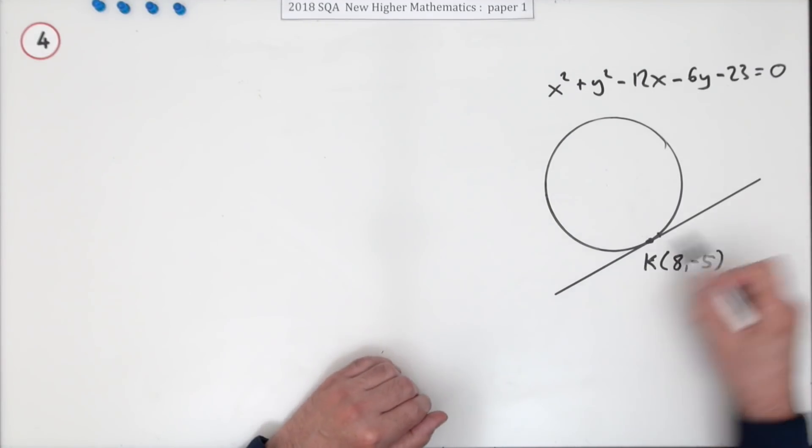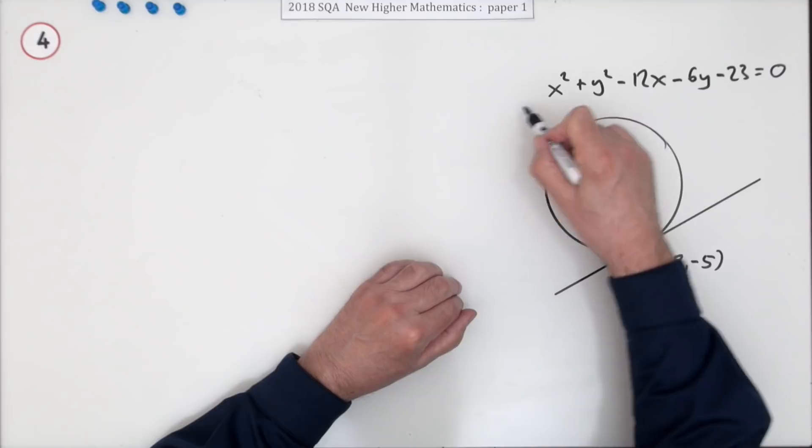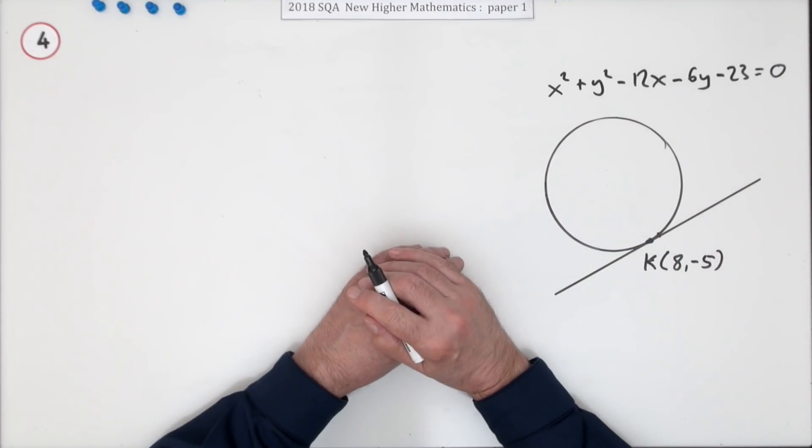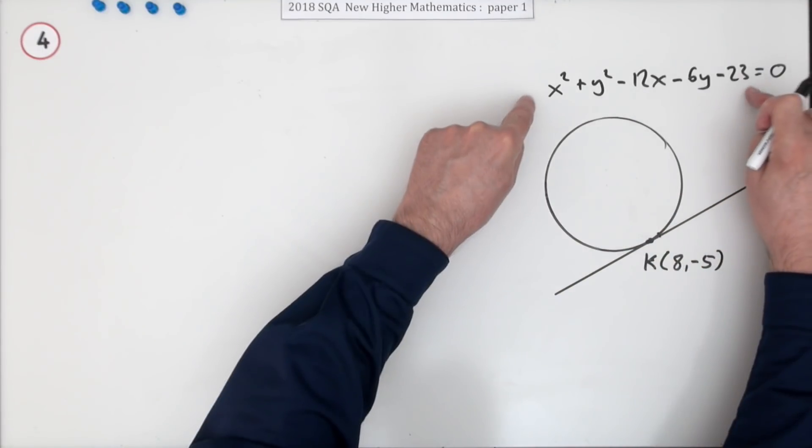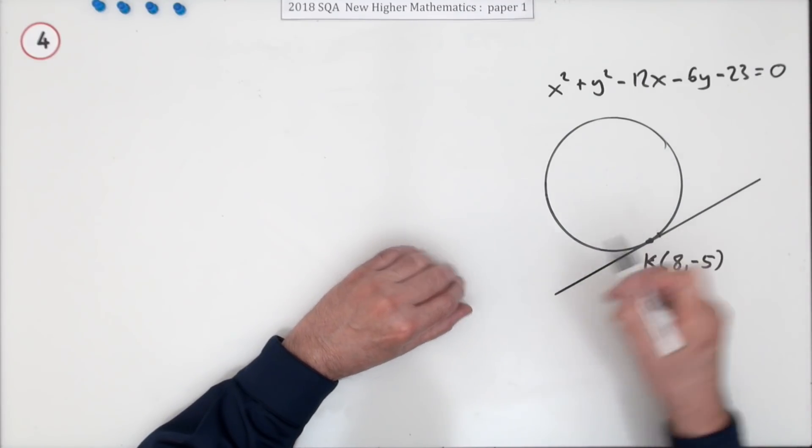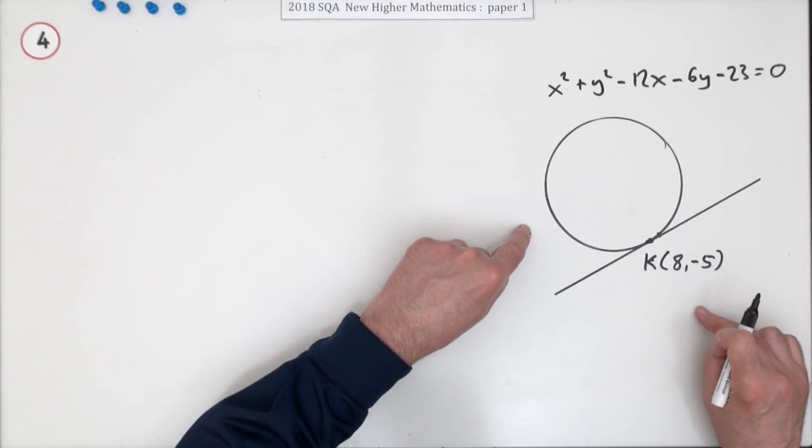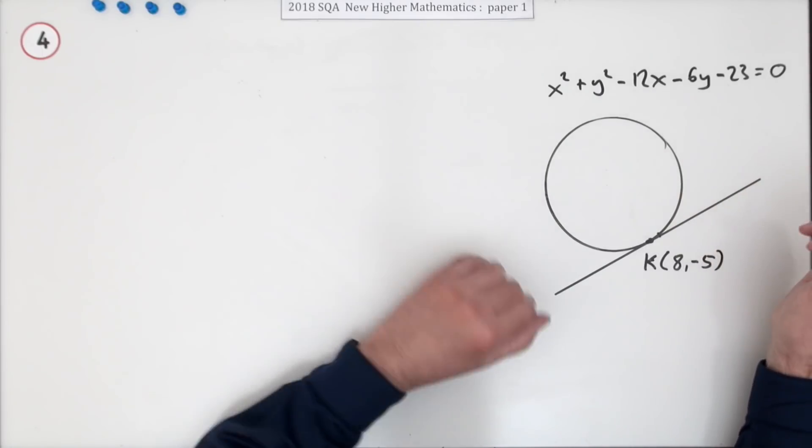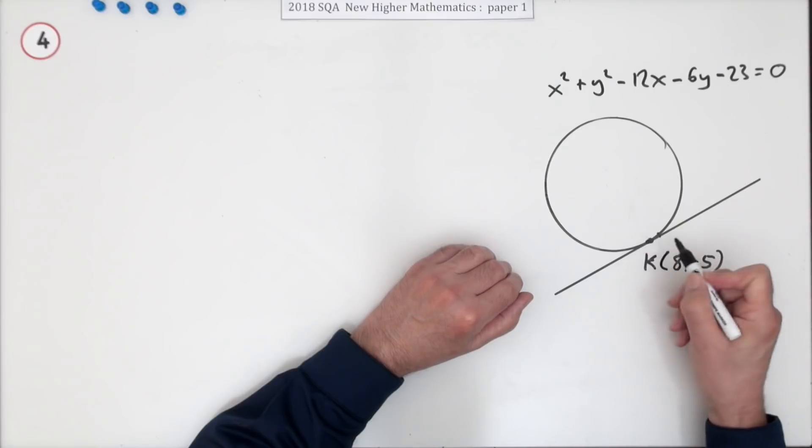You're used to finding the equation of a tangent to a curve by differentiating the equation of the curve, but in the Higher you don't know how to differentiate that, so you can't do it that way. You'll have to do it geometrically, but actually the geometrical way is easier than differentiation anyway. The geometrical way is simply to say this: if you've got a tangent to a circle, then drawing the radius from the center to that point of tangency, the radius must meet the tangent at right angles.